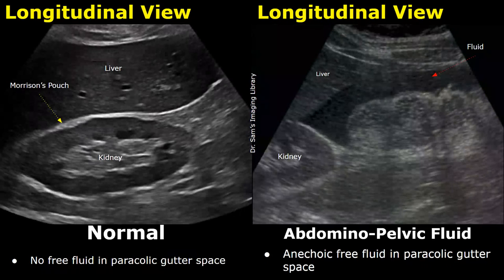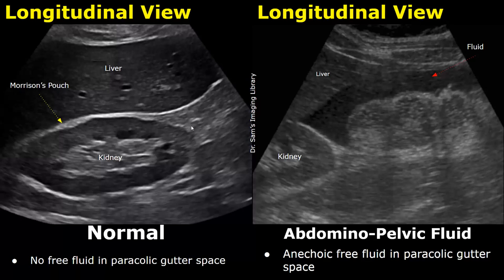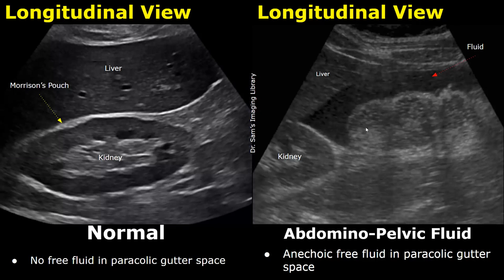Another important location to scan is the right paracolic gutter. This space is below the inferior pole of the right kidney and the inferior margin of the liver. Free fluid may be found in this location in some cases. In the normal case, no free fluid is found — we do not see any anechoic fluid. In this image, there is anechoic free fluid in the paracolic gutter space, between the bowels. This is another location where fluid can be found without fluid being seen in Morrison's pouch.